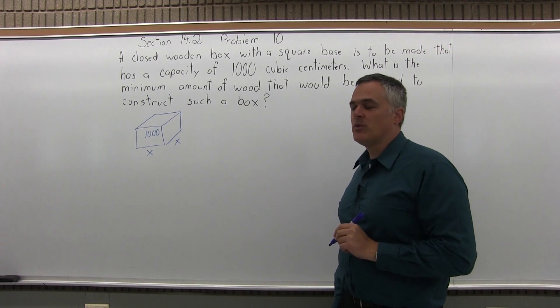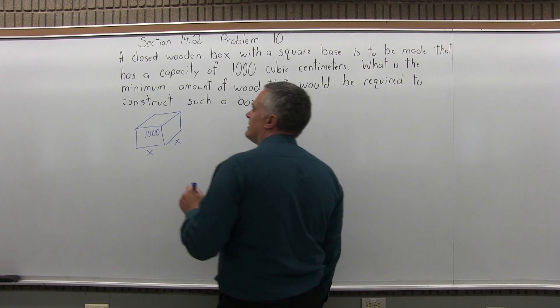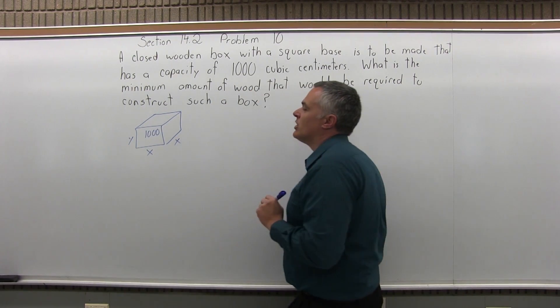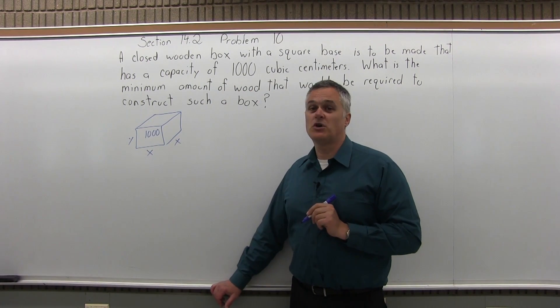So I think it helps a lot if you have a picture so you can visualize what's going on. So you have a box that's made of wood and it has to contain 1,000 cubic centimeters. It has a square base. So the length and the width we can both label as x. The height may or may not be the same, we can't know that so we'll just call the height y.